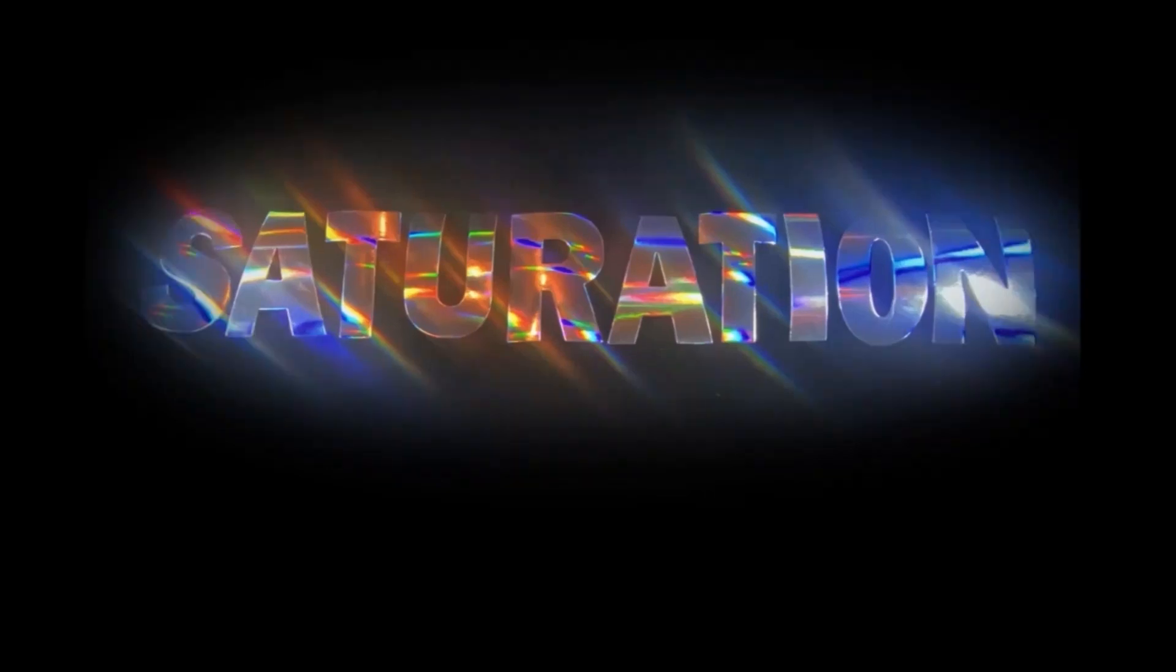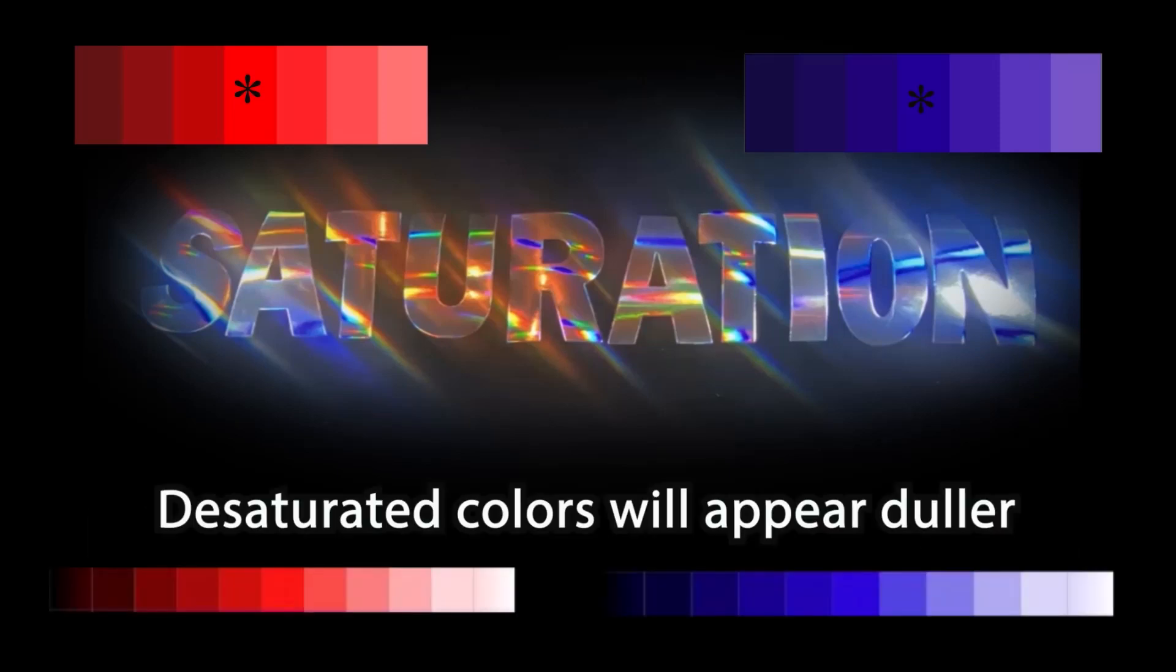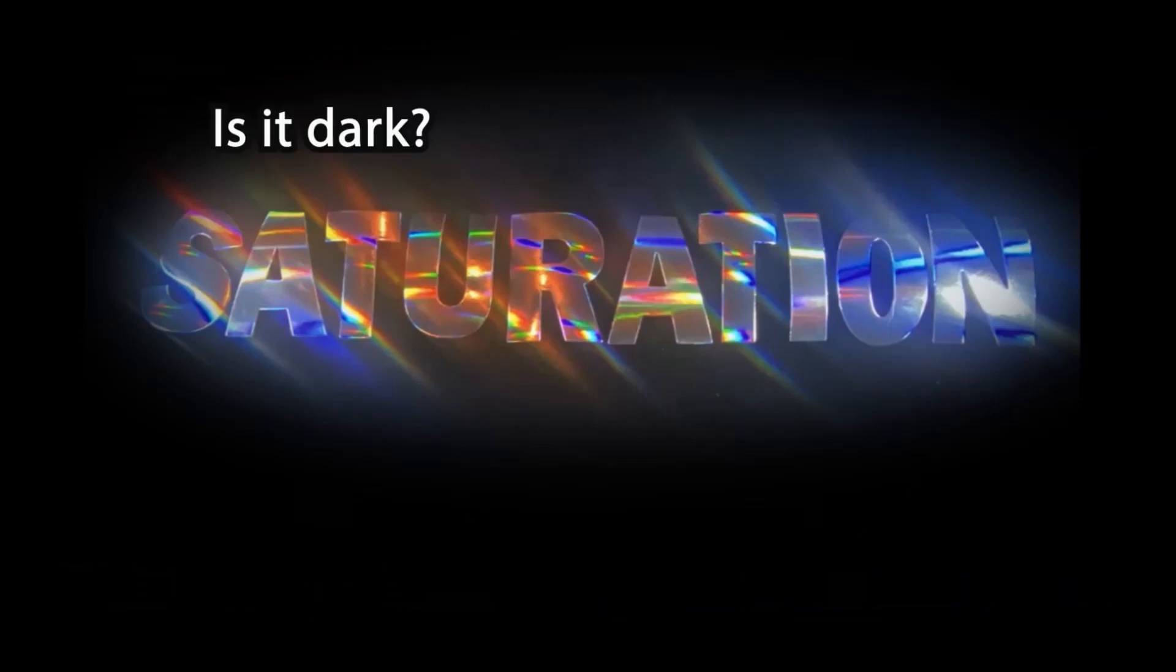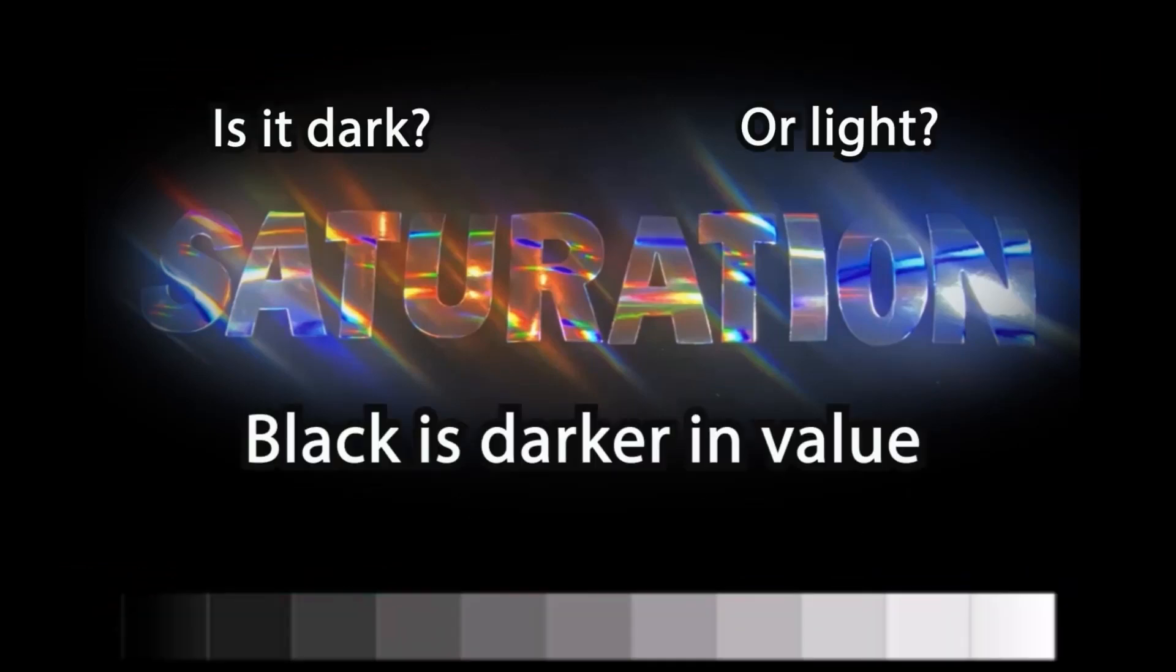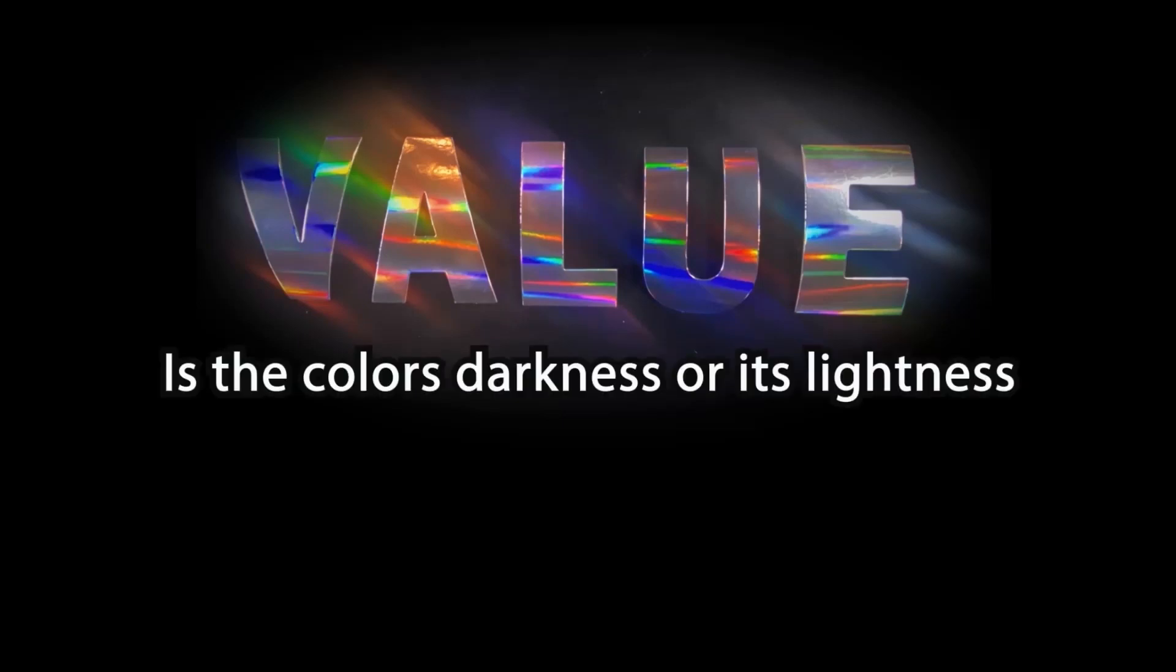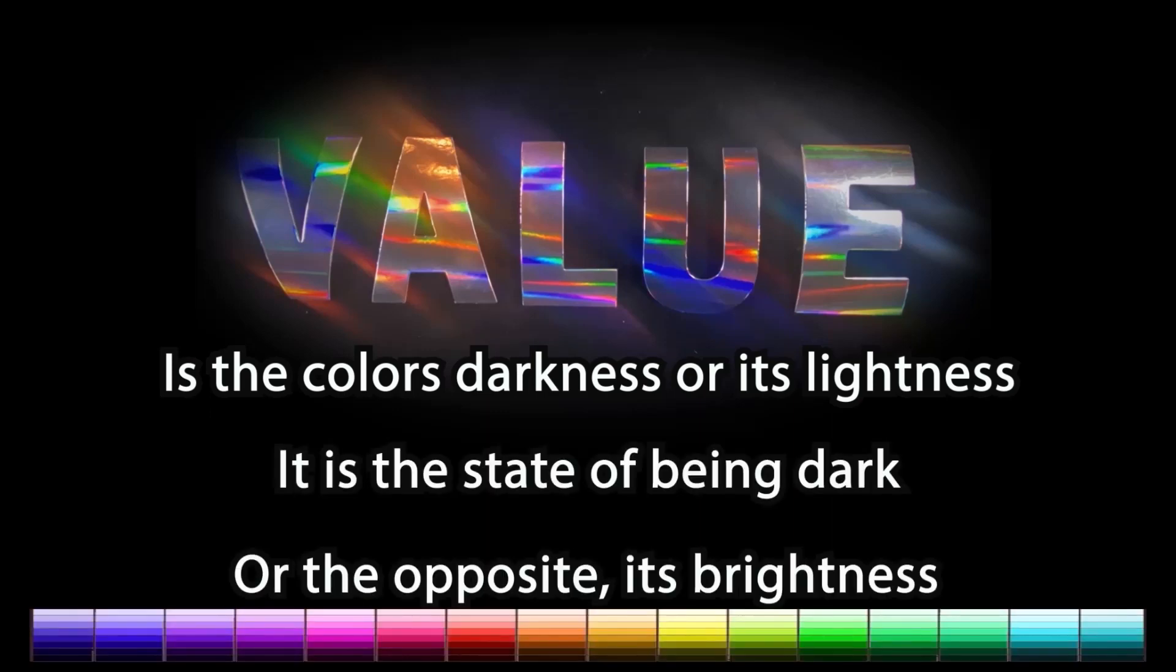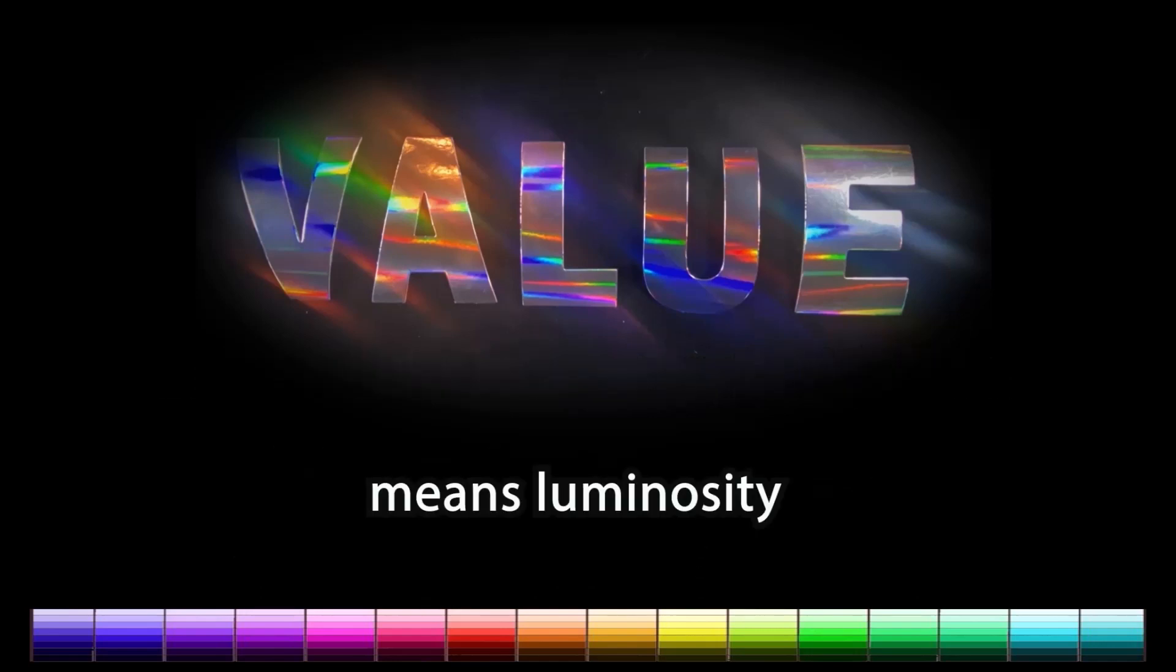Saturation. Saturation is the chroma, purity, or intensity of a color. Desaturated colors will appear duller. Is it dark or light? Black is darker in value. More luminous is white. Value. Value is the color's darkness or its lightness. It is the state of being dark or the opposite its brightness. Value means luminosity.